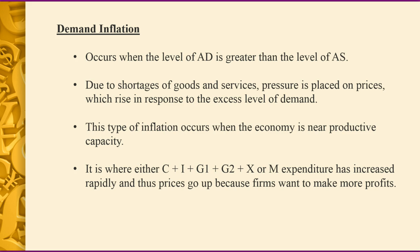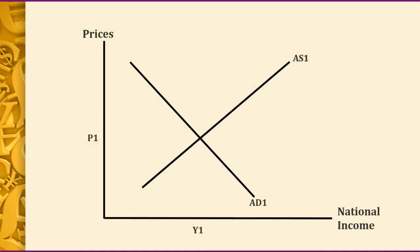We've all seen the equation for aggregate demand. Expenditure has increased rapidly, and therefore firms want to make more profits, so they'll put their price up. So here we have a normal supply and demand graph with inflation.